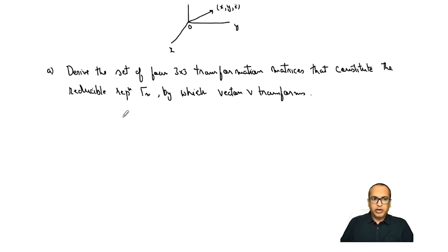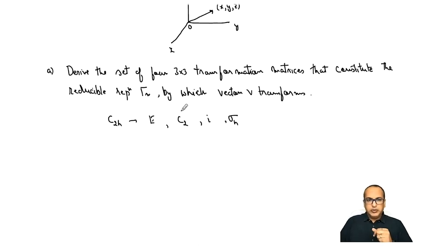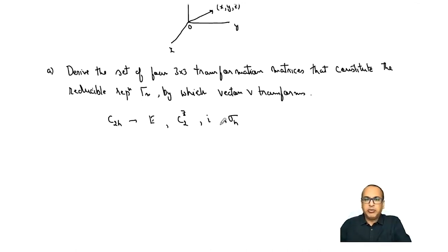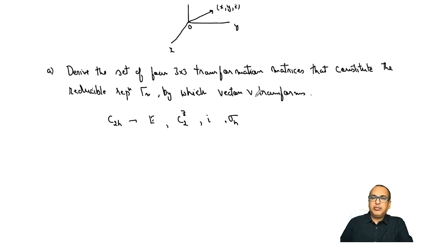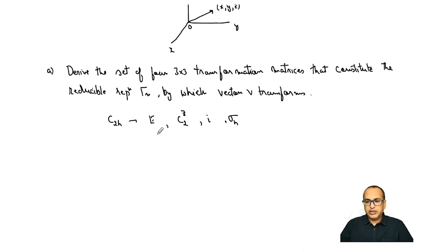The symmetry operations under C2h are E, C2, i, and σh, where C2 is along the z-axis (C2z). Under each symmetry operation we need to find the transformation matrix that defines how vector v transforms. This is essentially the unit vector transformation problem we have already learned.